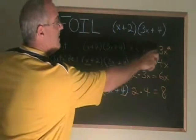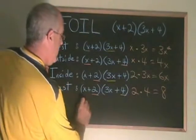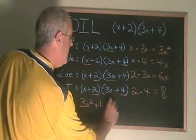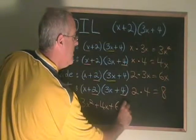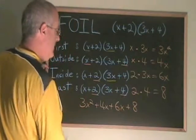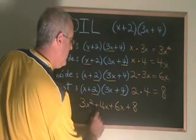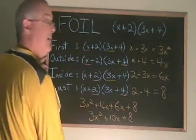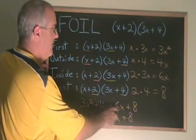Now we combine these terms together. We get 3x squared plus 4x plus 6x plus 8. And this simplifies to 3x squared plus 10x plus 8 if we combine the similar terms which are these two in the middle.